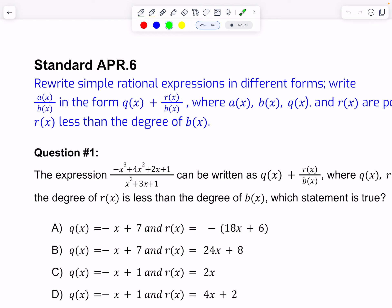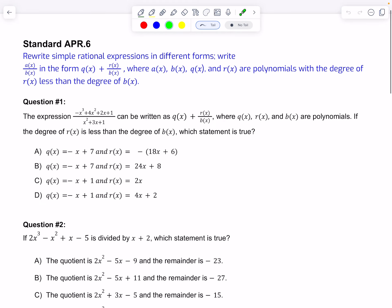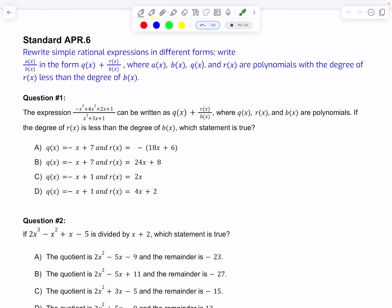That looks really complicated, but we're just dividing polynomials and writing it out with our quotient added to the remainder over the divisor if there is a remainder.